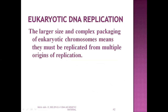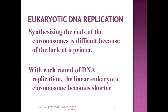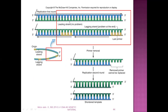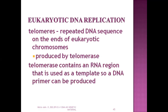In eukaryotic DNA replication, the larger size and complex packaging of eukaryotic chromosomes means the enzymes are more complex compared to prokaryotes. A primer is present and a replication fork is generated. Telomeres are formed — repeated DNA sequences on the end of eukaryotic chromosomes containing an RNA region used as a template, so a DNA primer can be produced. Regarding the central dogma: from DNA, mRNA is produced through transcription, and from mRNA a polypeptide chain is produced through translation. RNA must be made from DNA to complete the process of polypeptide chain formation.